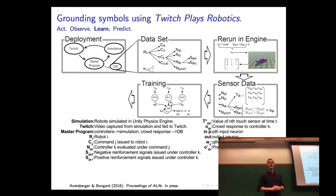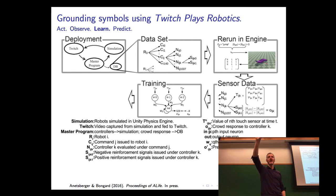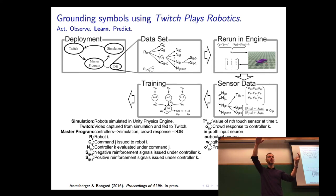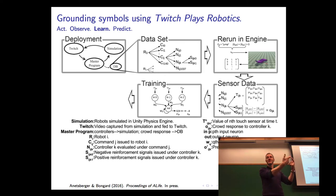We're going to train these neural networks like we've done before — start with random weights, take one of these controllers (we have many evaluated under 'jump' with at least one yes or no vote), push it through the second neural network, take the difference between O-prime (the network's prediction) and O (the actual crowd response). Set that difference aside, take the second controller, push it through, take the second difference, and push through every single controller evaluated on the worm robot under the command 'jump.'